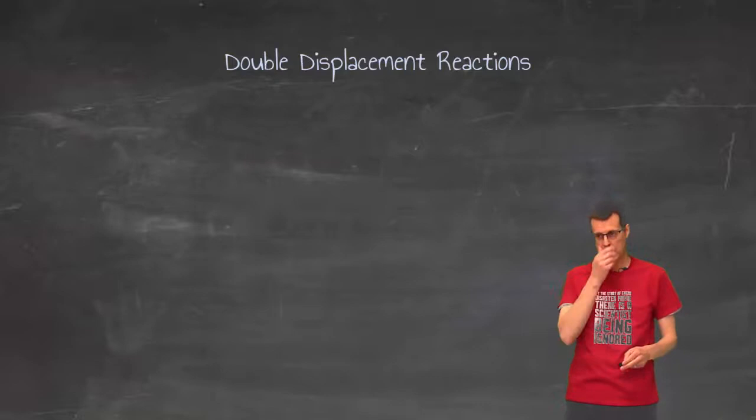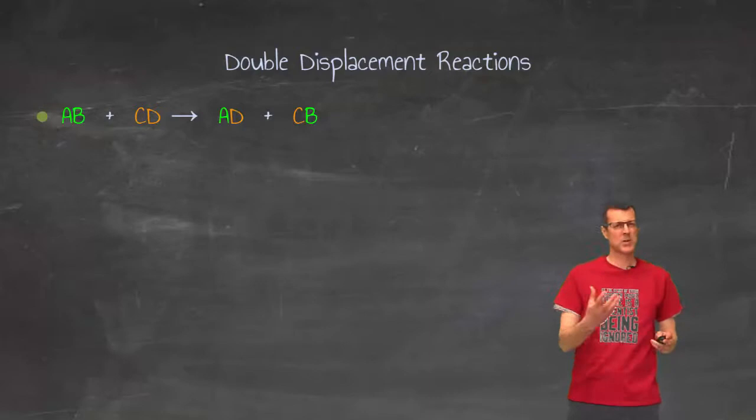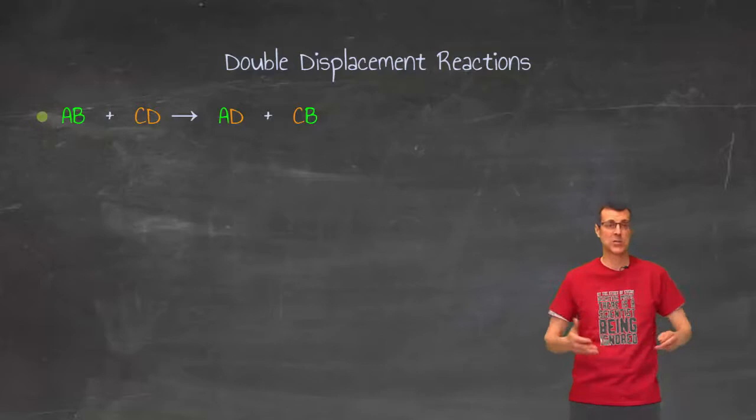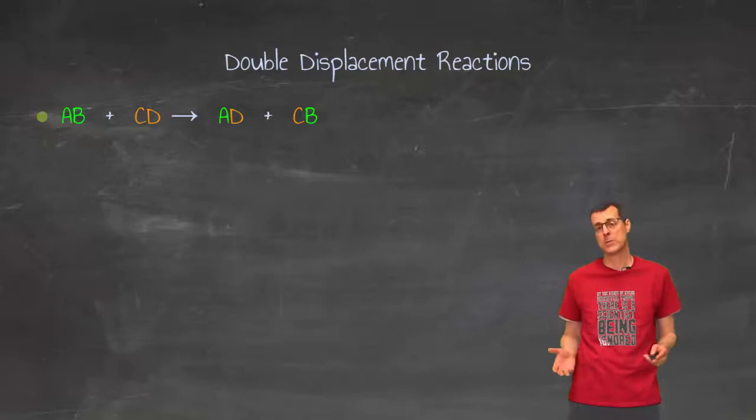So if we remind ourselves about a double displacement reaction, you start out with two compounds. That's one of the key differences between a double displacement reaction and a single displacement reaction. In a single displacement reaction, the pattern is compound element compound element, whereas in a double displacement reaction, it's compound compound compound compound.